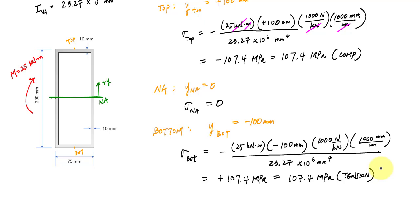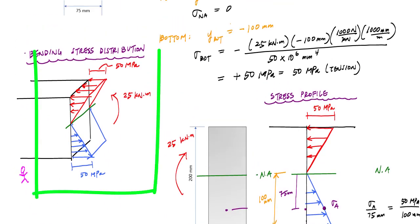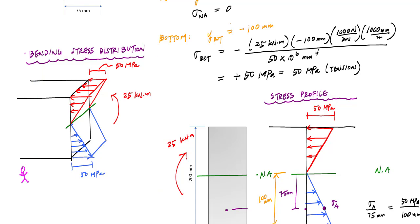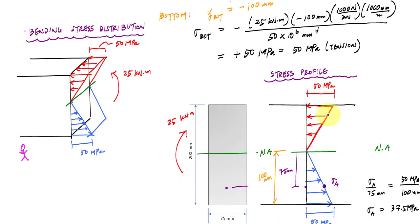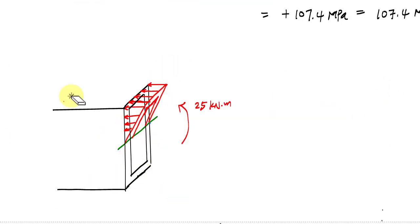Our stresses are bigger because of the hollow cross section and the lower moment of inertia. Now, stress can only act where there's material, so instead of a continuous distribution, our bending stress distribution will have holes in it and look like the shape of the cross section.